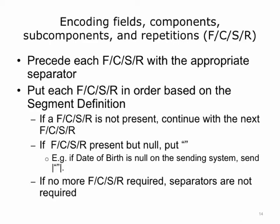HL7 has special encoding rules which the sender follows to encode a message in the HL7v2 message format for transmission. The sending system follows the format of the message definition as it creates the message. For each segment, it follows the order of fields in the corresponding segment definition, putting each field component, subcomponent, and repetition in order. If a field, component, subcomponent, or repetition is not present, it skips it and continues — meaning you get two vertical bars next to each other with nothing in between.